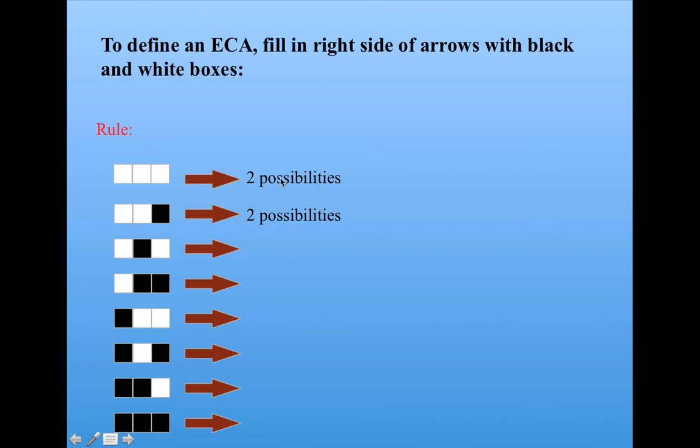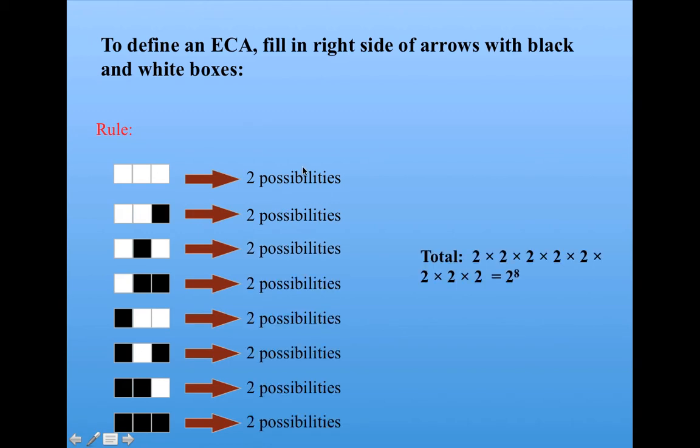This could be either black or white, and so on. So the total number of possibilities is 2 times 2 times 2, etc., 2 raised to the 8th power, which is equal to 256. So there are 256 possible elementary cellular automata. Not so many.